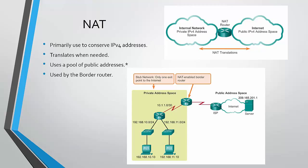NAT is primarily used to conserve IPv4 addresses. It translates when needed and uses a pool of public addresses. It is used by the border router — the router that divides the private address space from the public address space. This is a common topology most of us may find at home, without the switches of course, of a stub network, which is a network that only has one exit point to the internet.